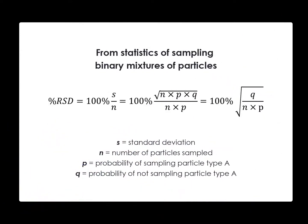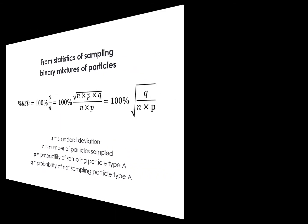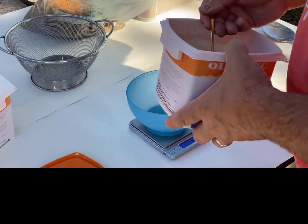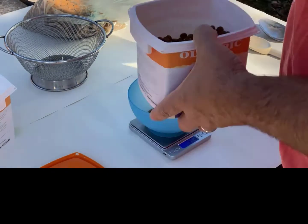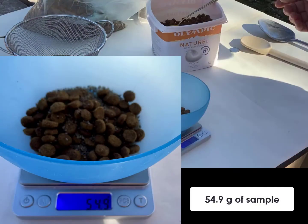From sampling theory, we know that sampling error should decrease if we take a larger sample. Strictly speaking, if we sample a larger number of particles, the error should go down. So what happens if we repeat the experiment but take more scoops of sample? In this sample, we have 55g of our mixture, so we would expect 27.5g of sand and 27.5g of kibble.